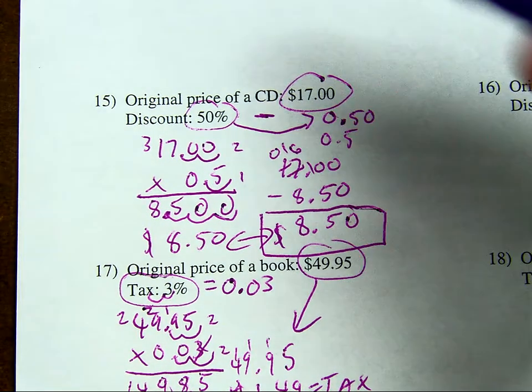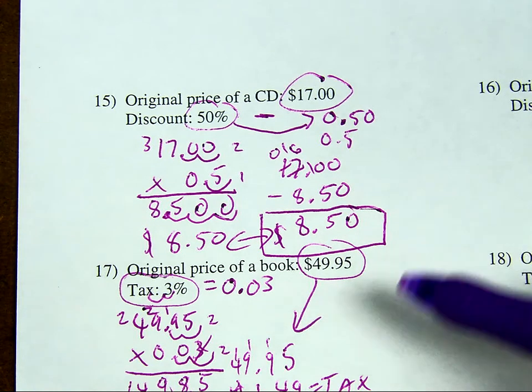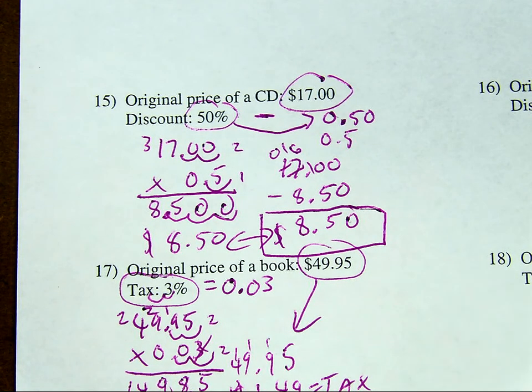That's how to do taxes and discounts. Tax is just a smaller form of markup. If you need to look back and figure out how to do markup, look at the previous video. It will show you how. Thank you.